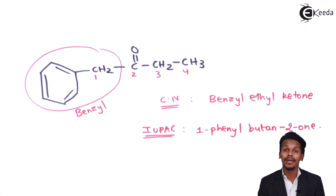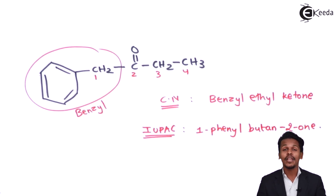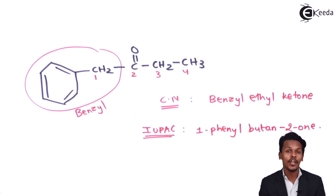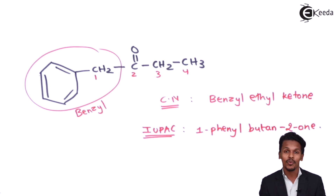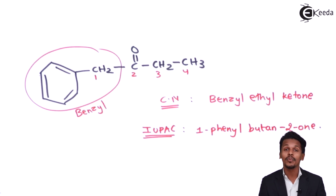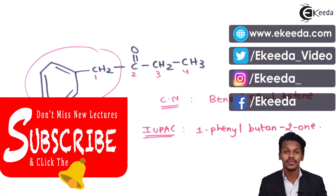So this is how we can give the common name as well as the IUPAC nomenclature to ketones. Thank you friends for watching this video. I hope you have understood how to give the IUPAC nomenclature to organic compounds having a given molecular or structural formula. See you next time.